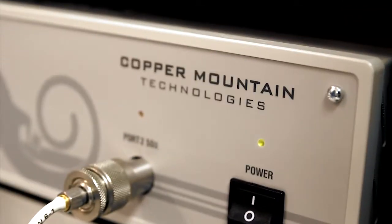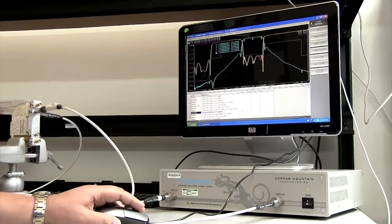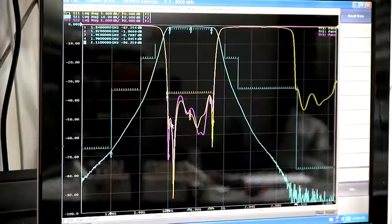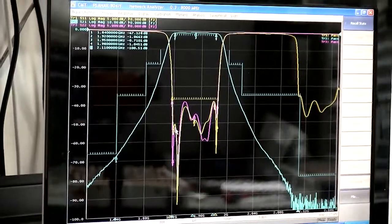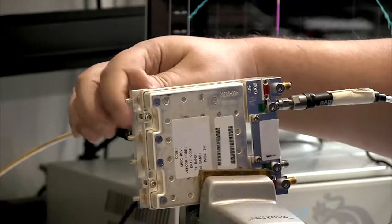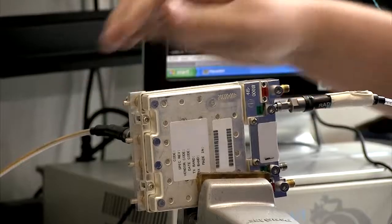The Copper Mountain Network Analyzer is used to sweep those frequencies through our product and gives us a response showing which frequencies will be passed by our products and which frequencies will be rejected by our products. That allows us to tune the products to the customer desired frequencies and sell them on to the customer.